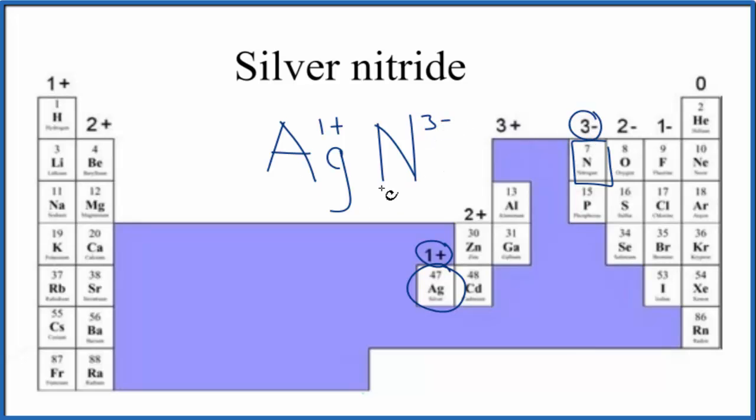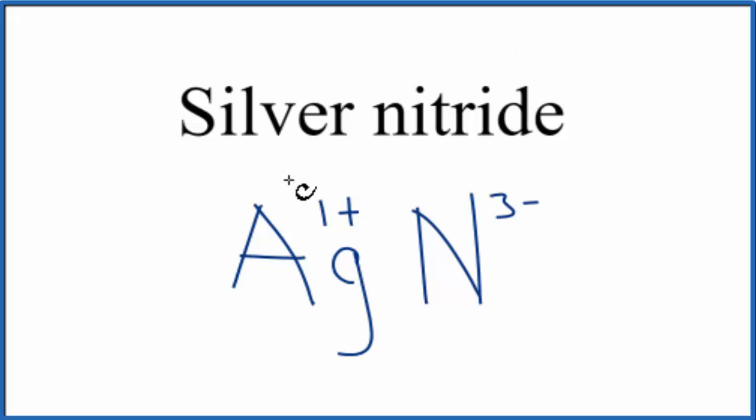So we have the charge for each compound. We can see that silver nitride is a neutral compound. It doesn't say ion after it. So all of the charges, they need to add up to zero, a net charge of zero. So we have a 3- here and a 1+. If we have 3 of these silver ions, 3 times 1+, that's 3+, 3+ and 3- net charge of zero.